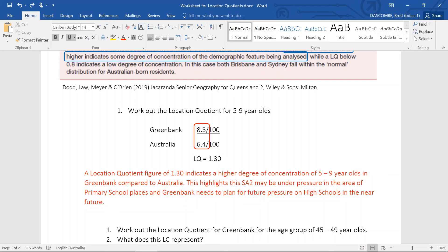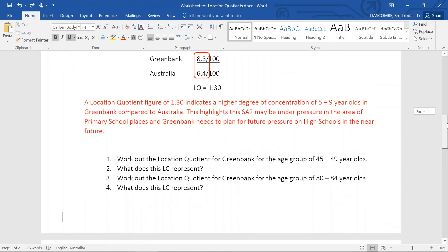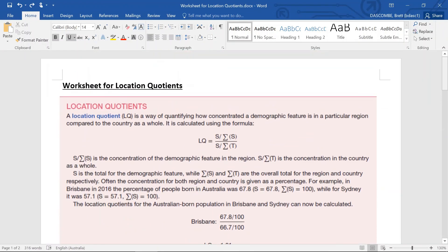So that's what you can do with the data once you've done that. Now what I want you to do is go down to the data set below and work out the location quotient for Greenbank for 45 to 49 year olds, and then for 80 to 84 year olds, and write up what that represents. Thanks for listening and good luck with that. Let me know how you go.